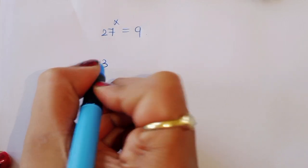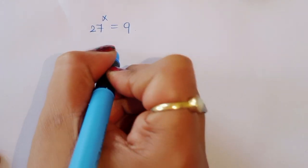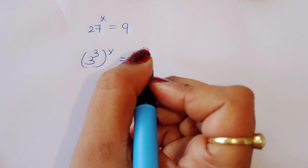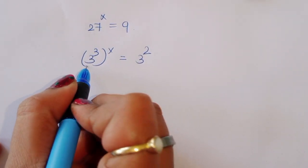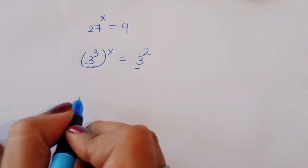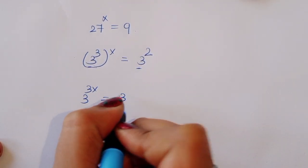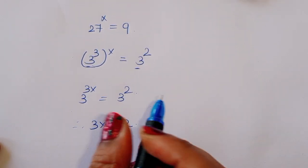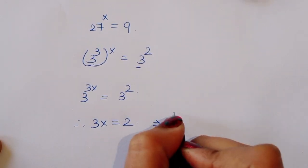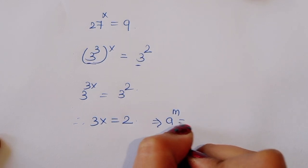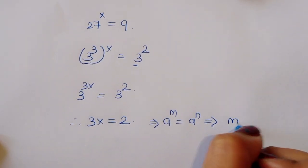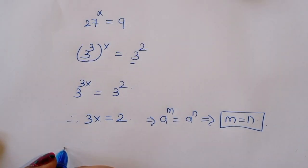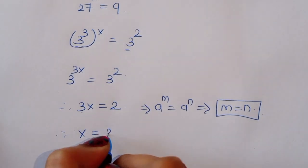Next, we write 27 raised to x equals 9, which is 3 squared. Since 27 equals 3 cubed, we have 3 raised to 3x equals 3 squared. Now we compare both sides. Using the formula a power m equals a power n implies m equals n, we get 3x equals 2, therefore x equals 2 by 3.